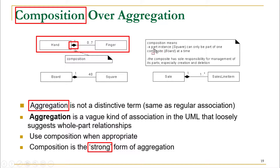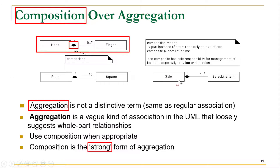Composition means a part — for instance a Square — can only be part of one composite Board at a time. The composite has sole responsibility for managing its parts, especially creation and deletion. For example, a Sale is composed of one or many SaleLineItems, but one SaleLineItem can only be part of one Sale, and the Sale is responsible for creating, deleting, and managing the SaleLineItems.